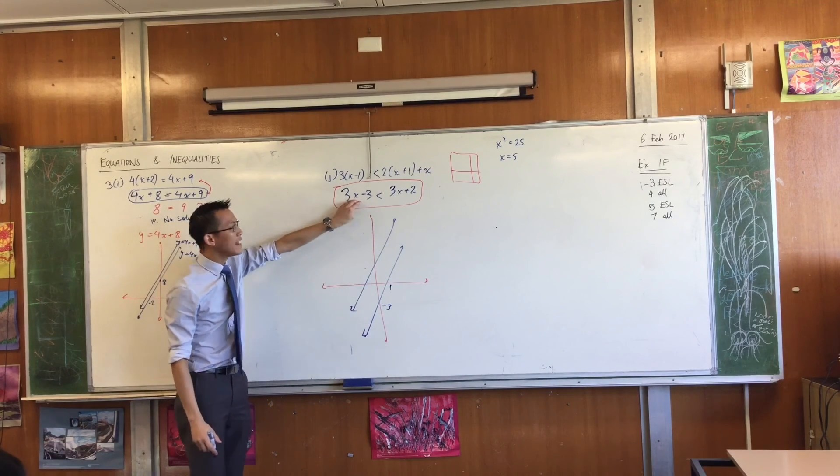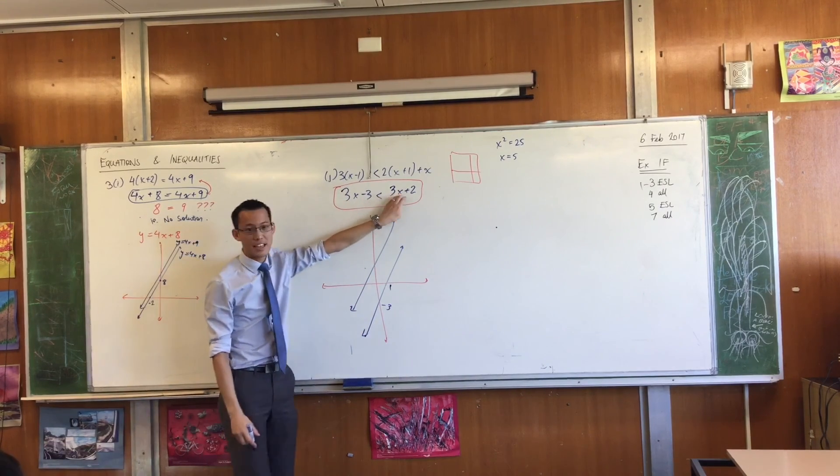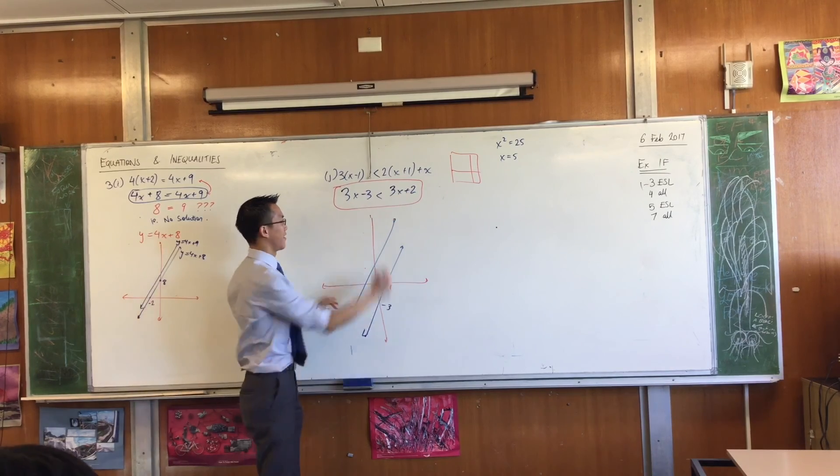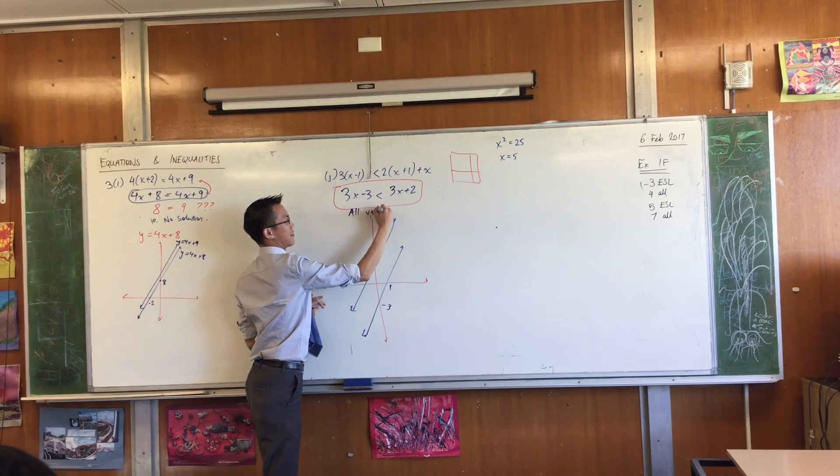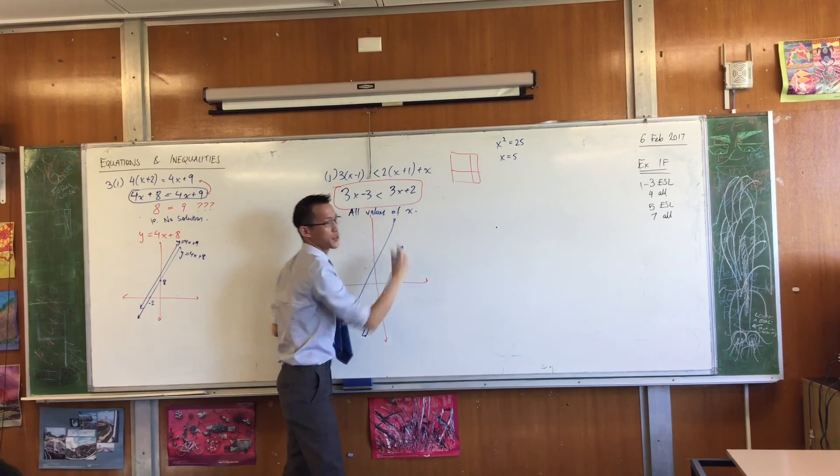So what this is saying is, when is this line below this line? Answer? Forward. Everywhere. All values. Half x. All x. All x.